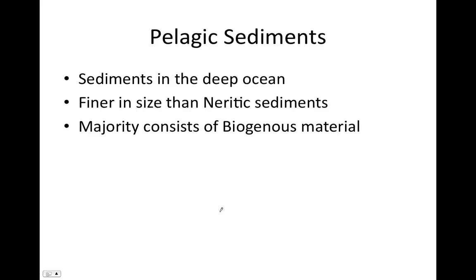The other type is pelagic sediments — sediments deposited on the deep sea floor. They're usually smaller in size than neritic sediments. Unlike neritic sediments that are mostly terrigenous, pelagic sediments are mostly biogenous. This makes sense because the further from land we go, the less land-derived material we have and the more material produced by organisms in the open ocean.